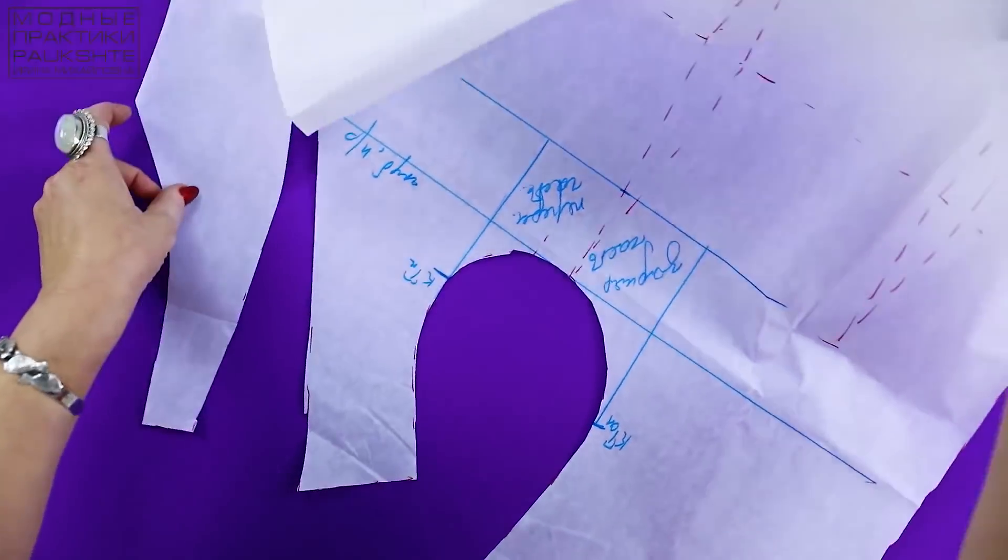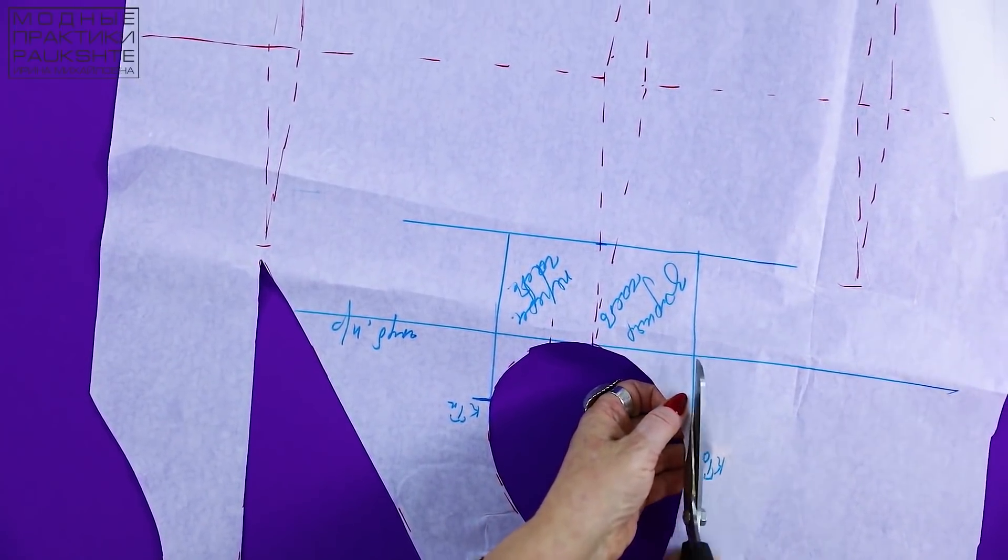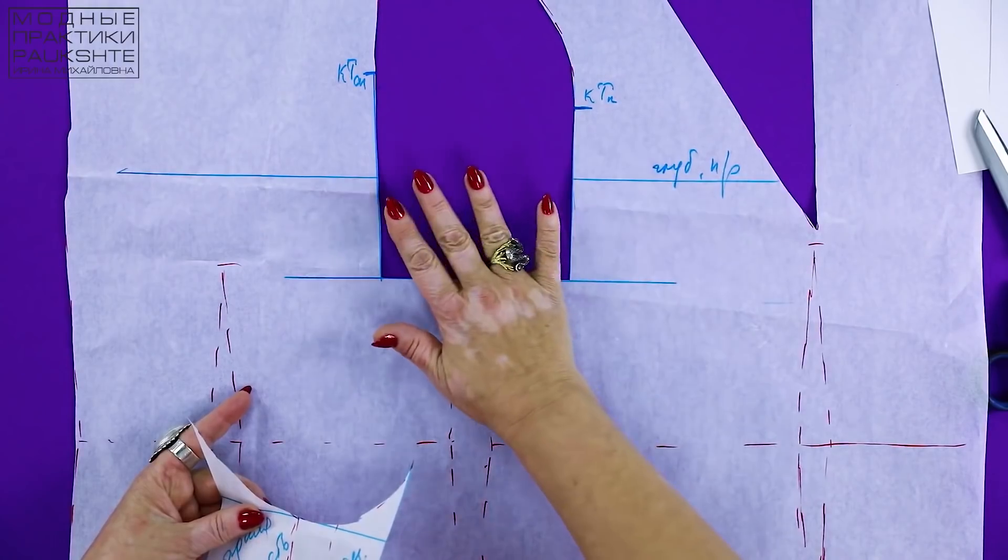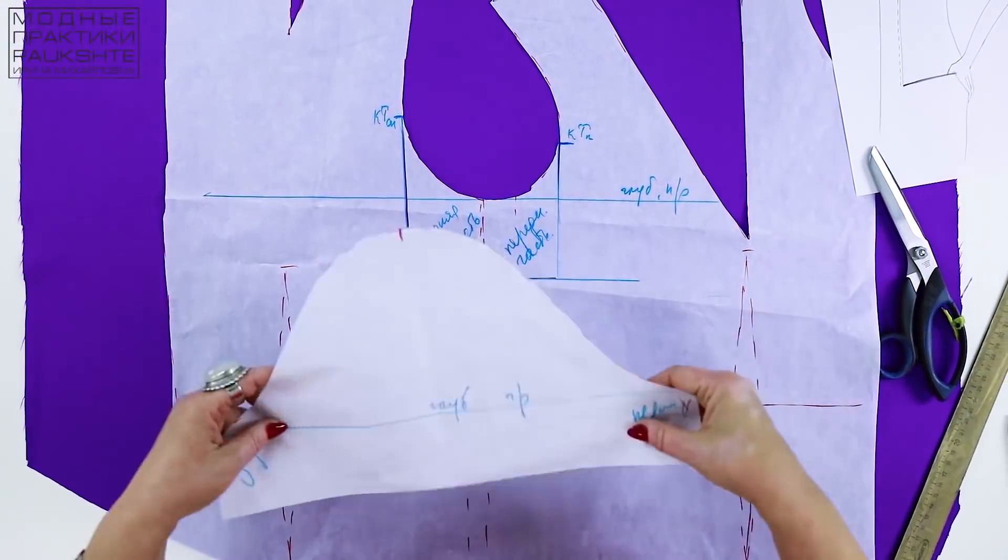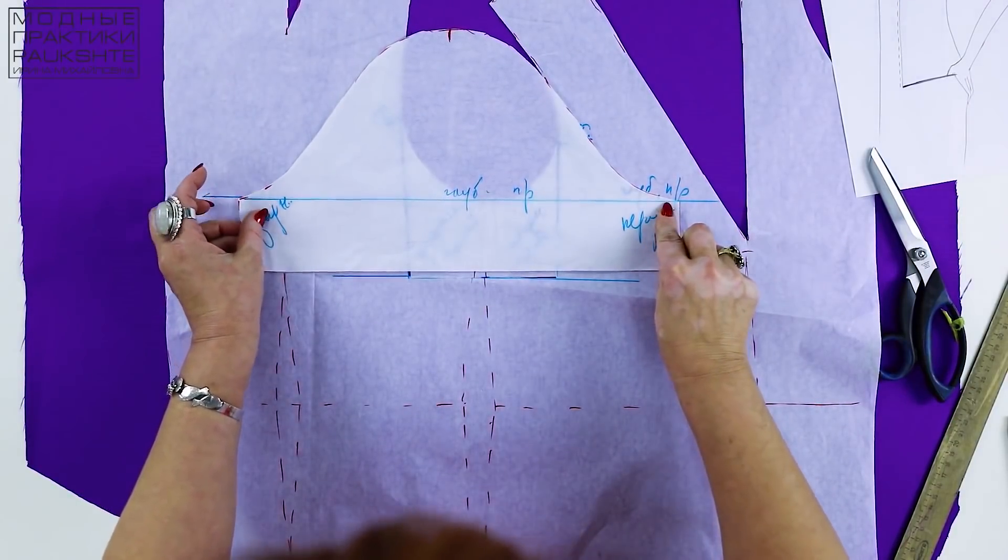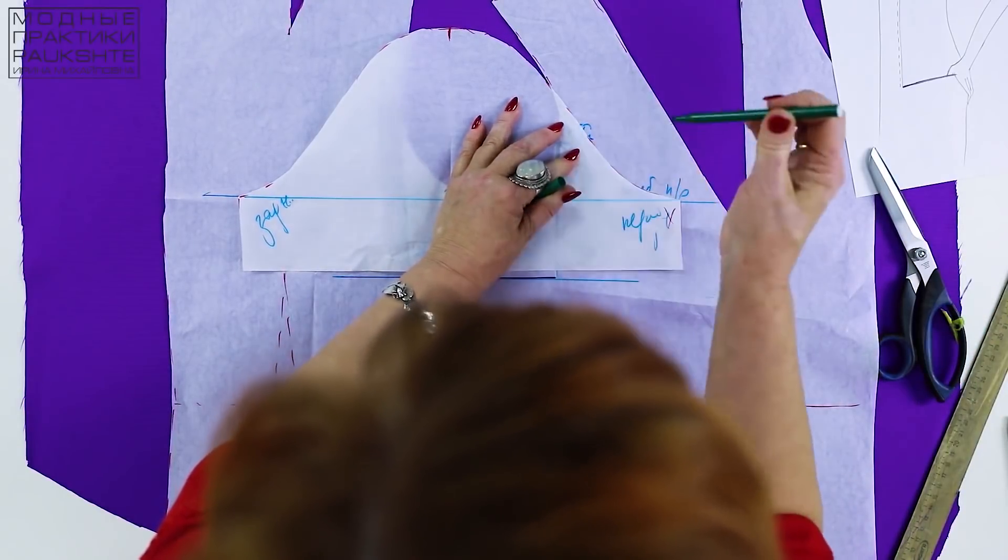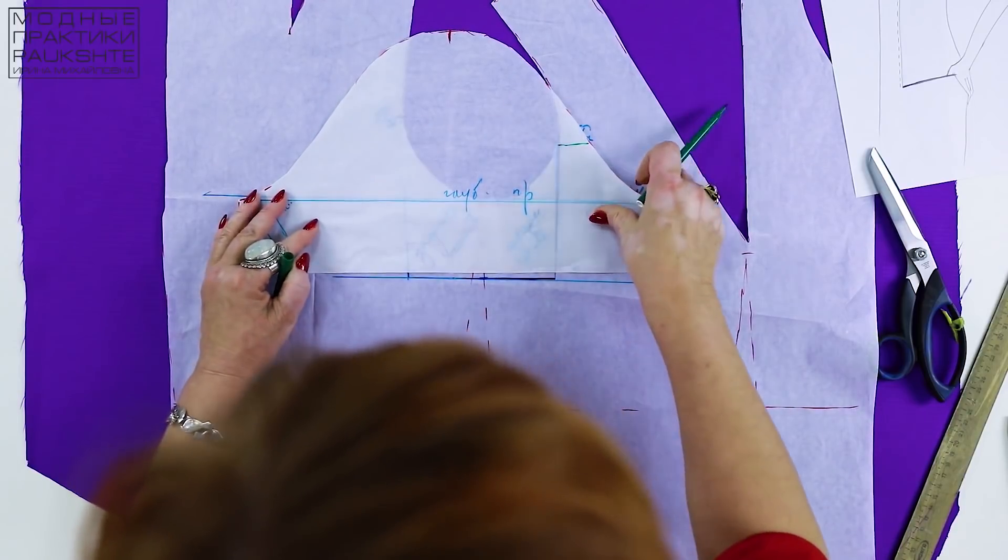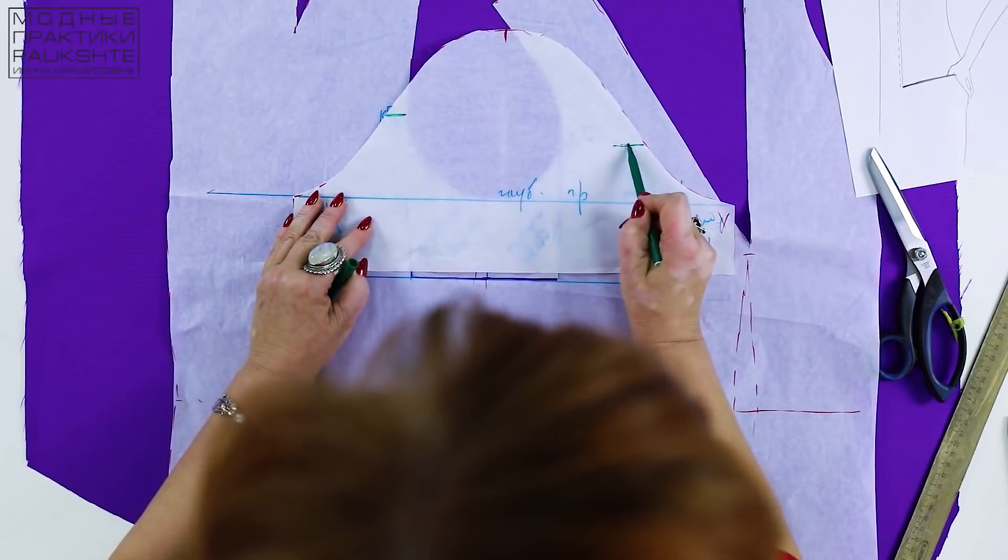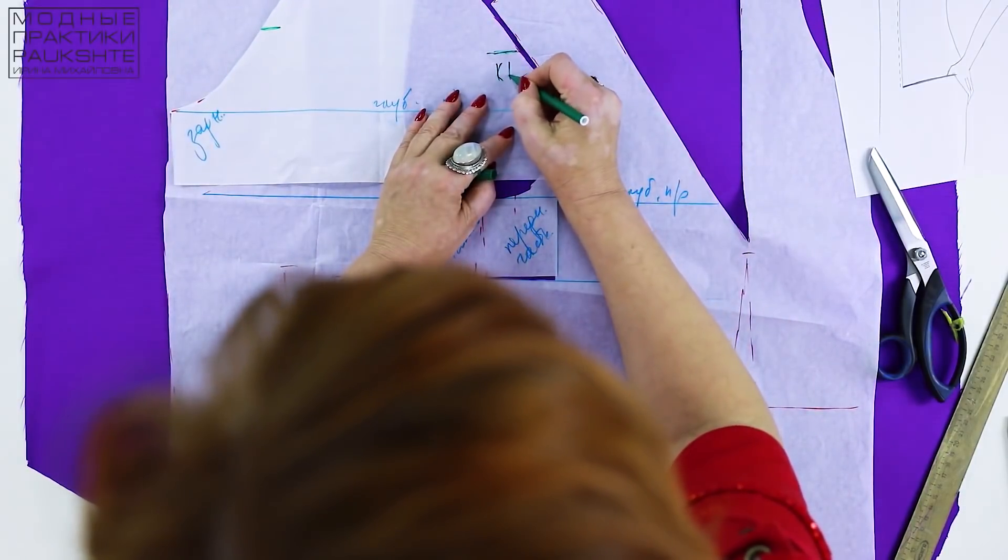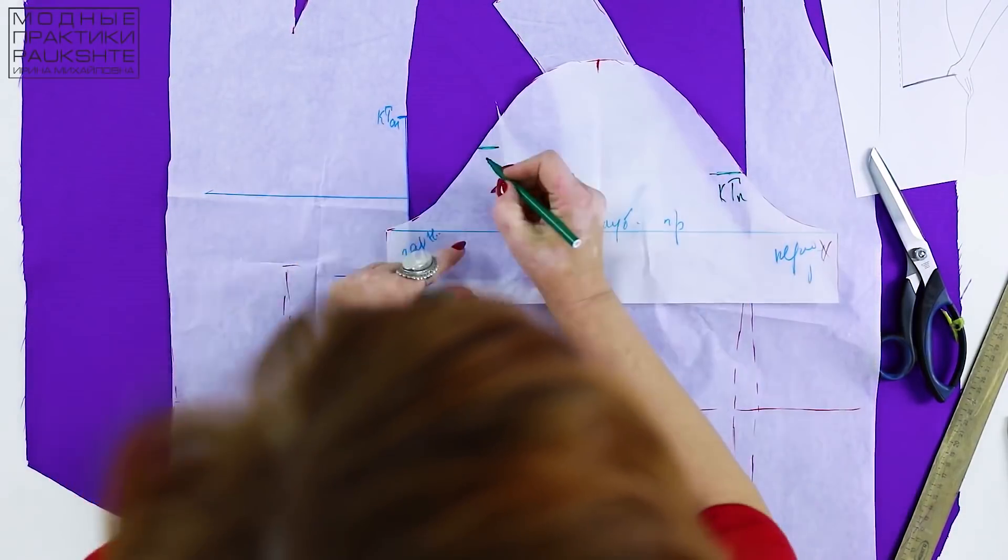Next thing we need to do is to change the sleeve pattern. It's much harder to do it. This is how the armhole looks like now. I put this piece back here to match these lines and mark the checkpoints. This is checkpoint front. And this is checkpoint back. I'll sign them. They are on the same height as the original ones.